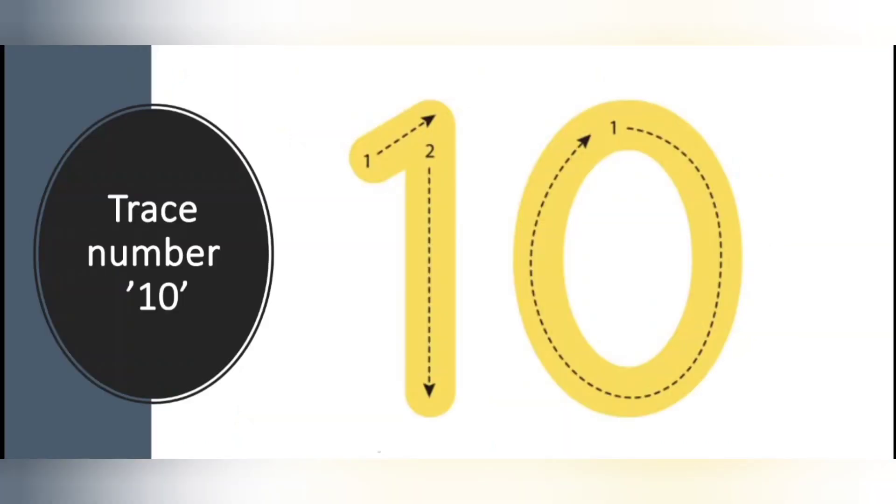We will see how to trace. For 10, we have to write 1 and 0. Let me show how to write. First, you have to write the number 1. To write side of it, you have to write 0. So 1, 0, 10. You have to write 0 on the right side. Let me show you again.